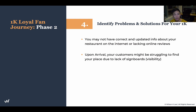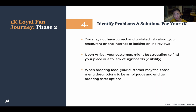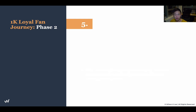Upon arrival, your customers might struggle to find your place due to lack of signage. If you don't have enough lighting for your signages, buy a light, brighten the place up, or add decor so people can easily find your spot. When ordering food, customers might find menu descriptions too ambiguous and end up ordering safer options. If they don't understand what you're selling, they'll just go with the chicken or the steak. Use simple, vivid, easily understandable language — that's a great area for improvement.